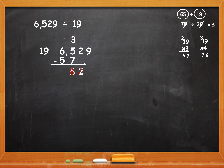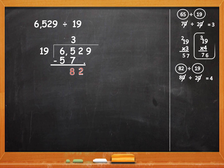Next, divide 82 by 19. Write that in the rough column: 82 divided by 19. Round off 19 to 20. And 82 is closer to 80, so round off 82 to 80. Cancel the zeros — 8 divided by 2 is equal to 4. Now, 19 into 4 we have already done: that is 76, which is less than 82. But we will check 19 into 5: 5 nines are 45, carry over 4, 5 ones are 5 plus 4 is 9, giving 95. 95 is more than 82, so it is not 19 into 5.